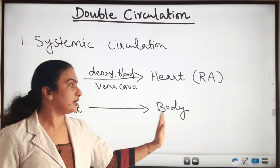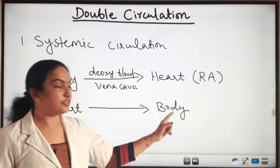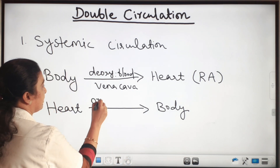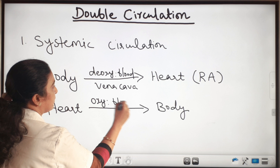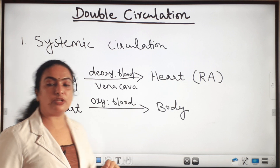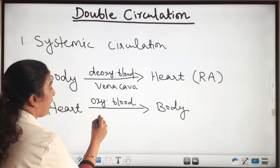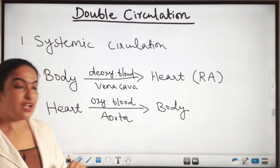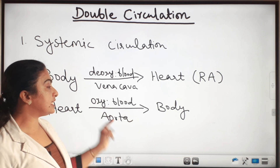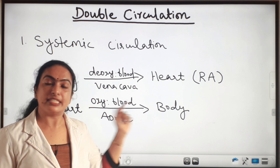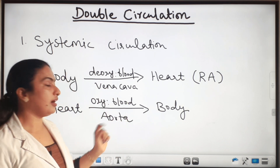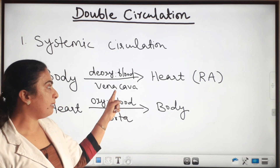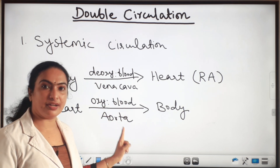And from the heart there is a back flow of blood to the body. Which type of blood? That is oxygenated blood. Through which blood vessel? Through the aorta. So which are the blood vessels involved in systemic circulation? Vena cava and aorta — these are the main blood vessels. The vena cava is the main vein and the aorta is the main artery.